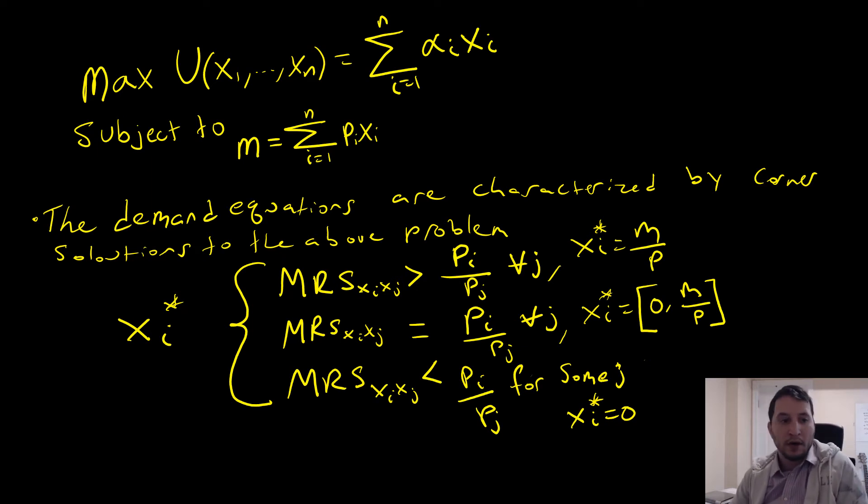Hey guys, welcome to this video where we're going to go through a utility maximization problem where our utility function is an n-good perfect substitutes type of utility function. In this case, the Marshallian demands are characterized in this piecewise fashion.